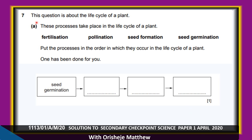Question 7 is about the life cycle of a plant. Put the processes in order: seed germination, then pollination, then fertilization, then seed formation.